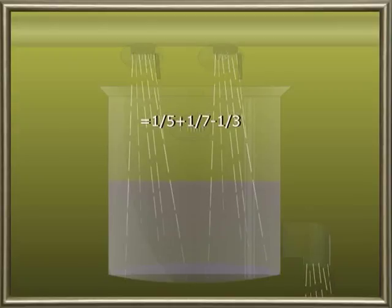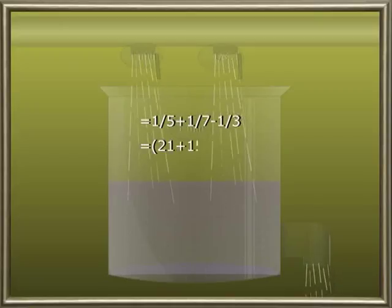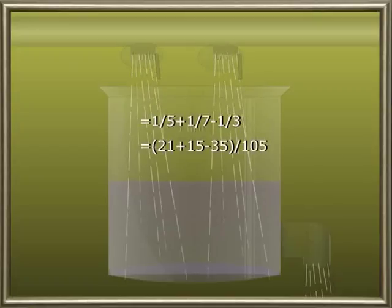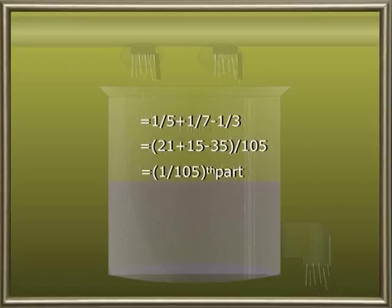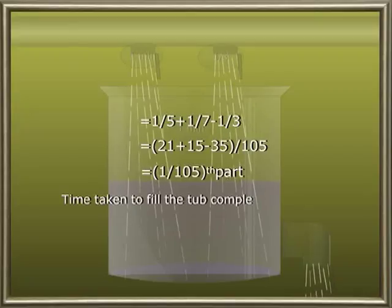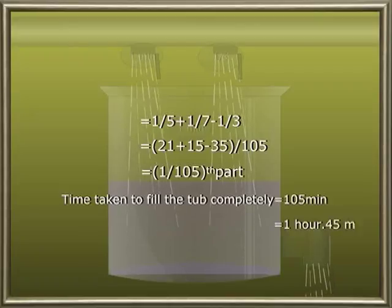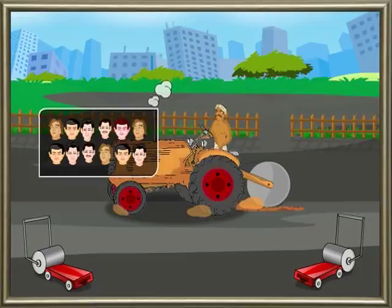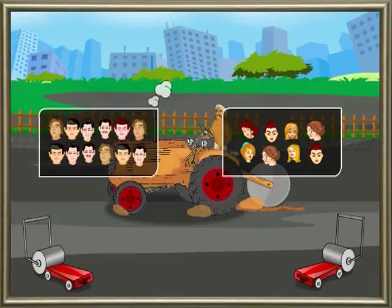So the portion of the tub filled when all are kept open in one minute is 1/5 + 1/7 − 1/3. Taking common denominators: (21 + 15 − 35)/105 = 1/105. Therefore it takes 105 minutes for the tub to be full.